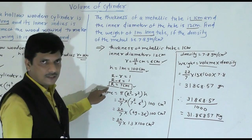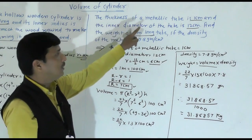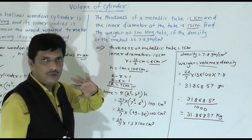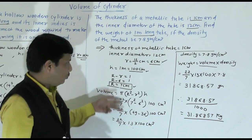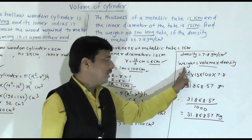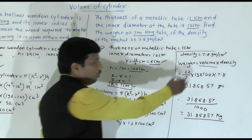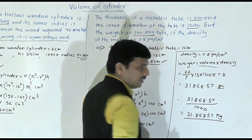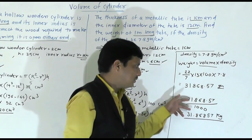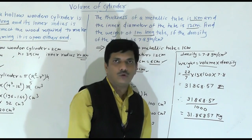To summarize Problem 2: thickness and inner radius were given; from these we found the external radius. Since this is a metallic pipe, we use the hollow cylinder formula for volume. After finding the volume, we applied weight equals volume × density to get the weight in grams, then converted to kilograms by dividing by 1000. Final answer: 31.87 kilograms.